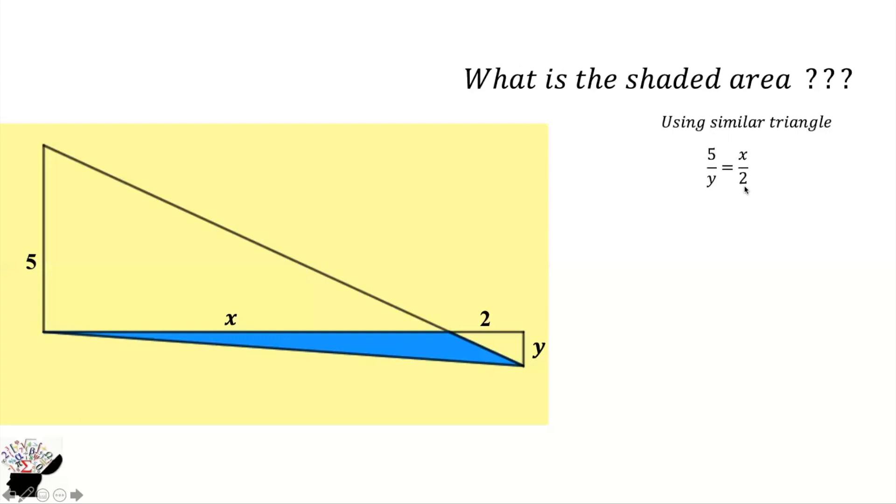We are going to get 5 divided by y is equal to x divided by 2. You cross multiply, you get xy to be 10.